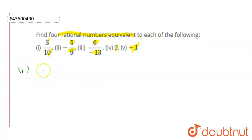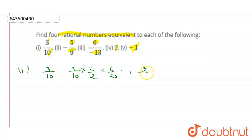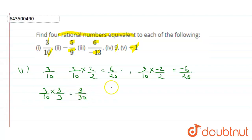The first number given to us is 3 upon 10. The first rational number equivalent to it: 3 upon 10 multiplied by 2 upon 2 equals 6 upon 20. Next, 3 upon 10 multiplied by minus 2 upon 2 gives minus 6 upon 20. Then 3 upon 10 multiplied by 3 by 3 gives 9 upon 30, and 3 upon 10 multiplied by 4 by 4 gives 12 upon 40.